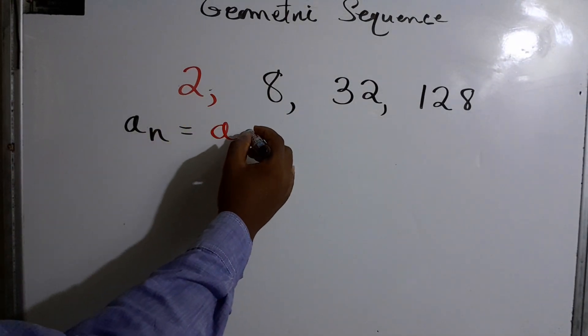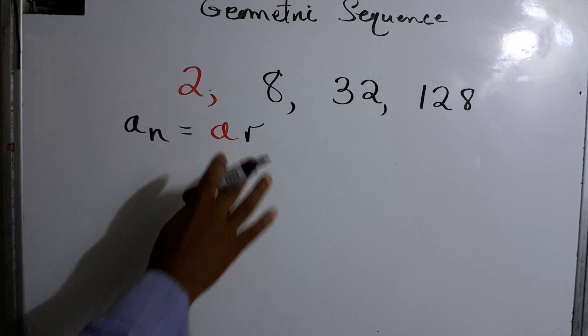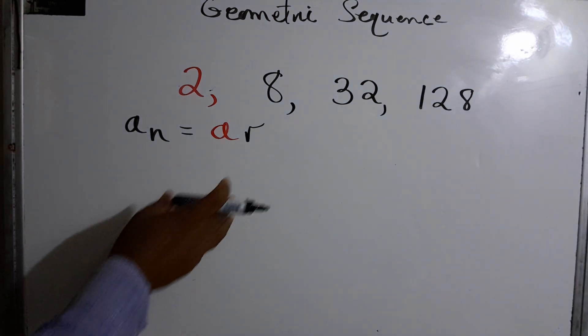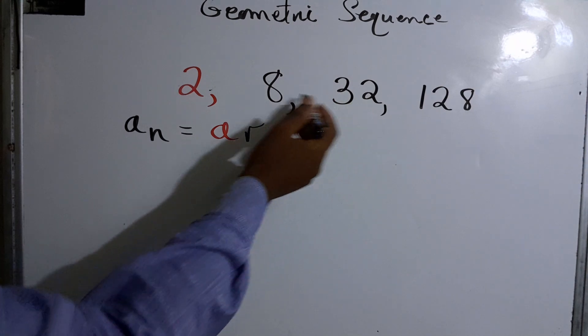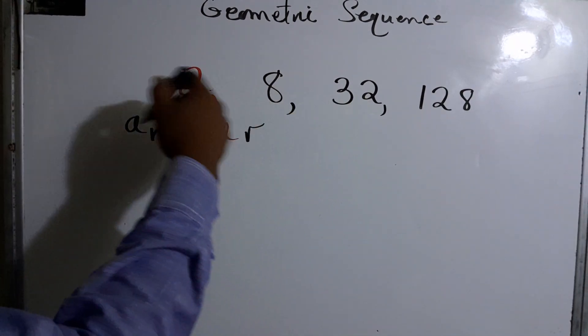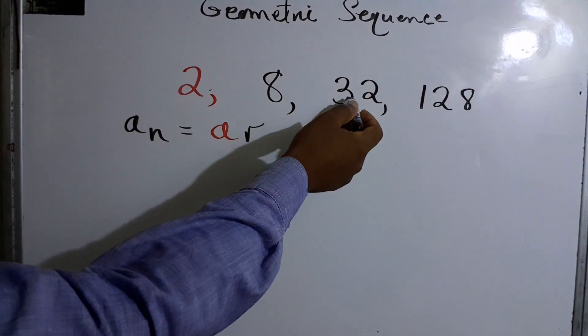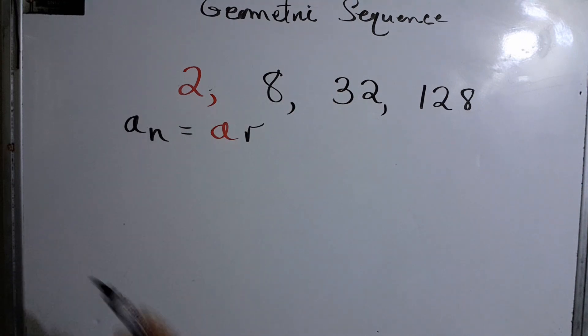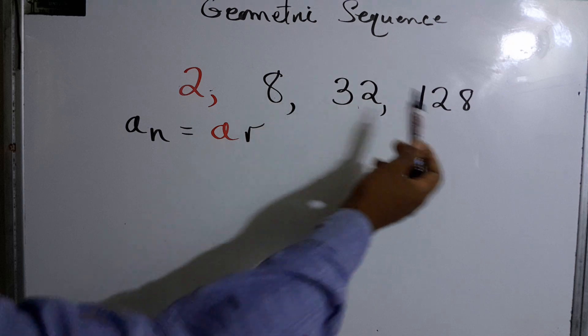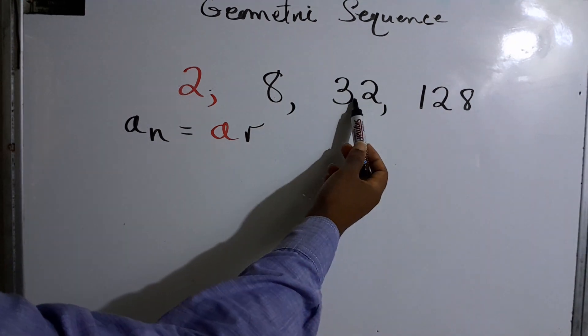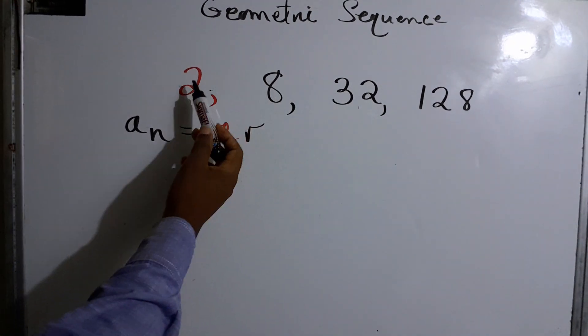We have what we call r, and r is the common ratio. To find the common ratio, it's basically the end term divided by the previous term. For example, we can have the third term divided by the second, or the fourth by the third, or the second by the first.